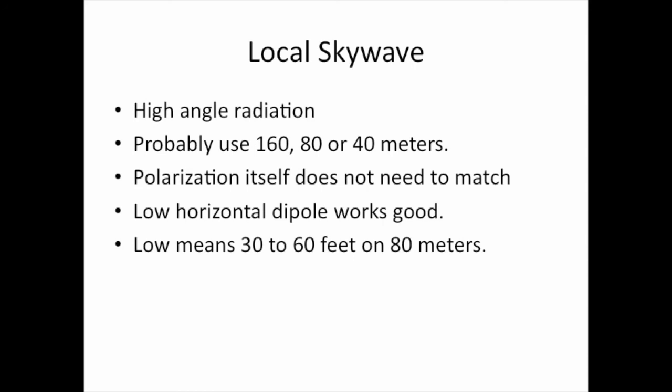Local sky wave communication requires high-angle radiation, typically on 160, 80, or 40 meters. Polarization of the transmitting and receiving antennas does not need to be matched for sky wave — you don't need vertical to communicate with another vertical station. A low horizontal dipole works great for local sky wave, and 'low' on 80 meters means 30 to 60 feet.